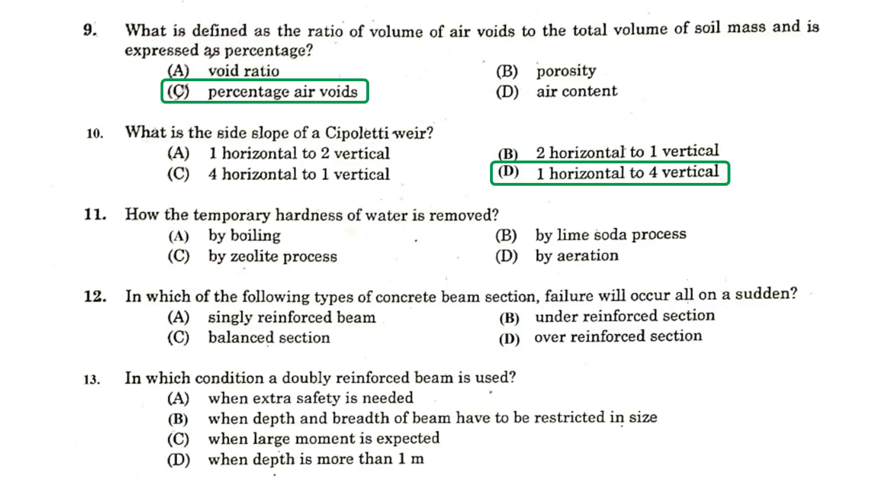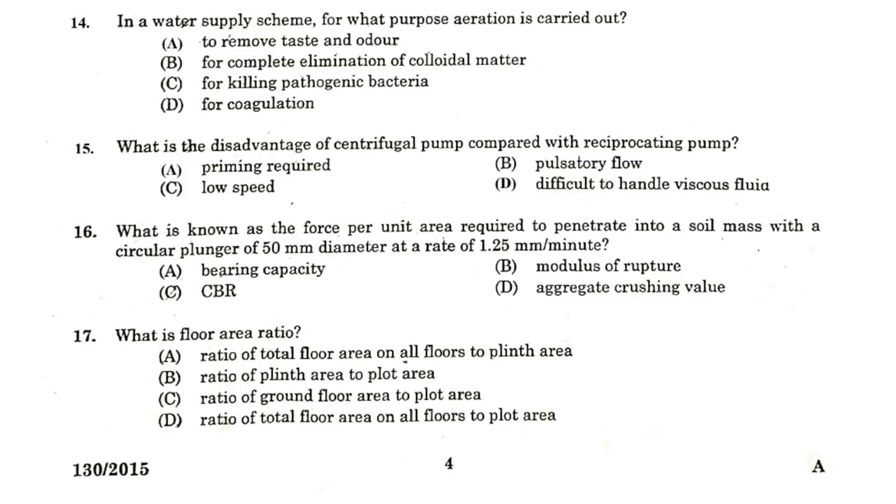How the temporary hardness of water is removed? By boiling. In which of the following types of concrete beam section failure will occur all on a sudden? Over reinforced sections. In which condition a doubly reinforced beam is used? When depth and breadth of the beam have to be restricted in size. In a water supply scheme for what purpose aeration is carried out? To remove taste and odor.